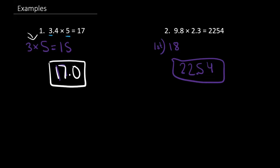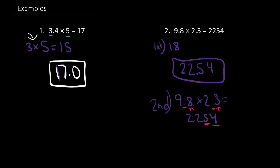So that's the first method. Now we're going to learn the second method. Basically what the second method is, we count the number of numbers after the decimal point. So we see where the decimal points are — in this case right here. We see how many numbers are there after each decimal point: 1, 2. We combine them. Then that means that in our answer there should be two numbers after the decimal point. So we count 1, 2, and our decimal point will be after 22.54.